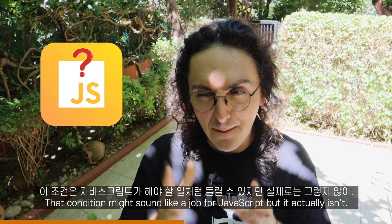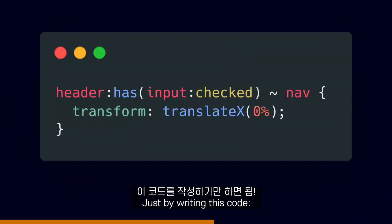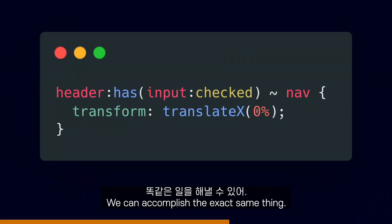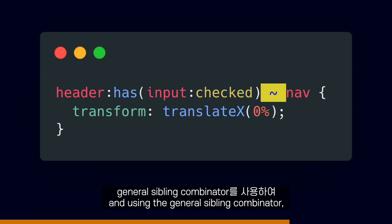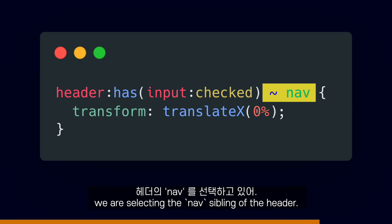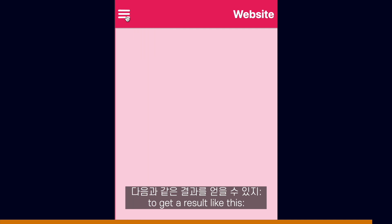That condition might sound like a job for JavaScript, but it actually isn't. Just by writing this code, we can accomplish the exact same thing. Here, we are checking if there is a header with a checked input inside of it, and using the general sibling combinator, we are selecting the nav sibling of the header. Then all that's left is to unhide the navigation to get a result like this.